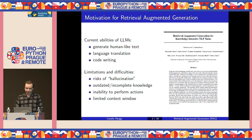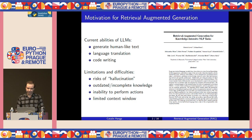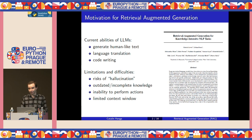We should also mention their inability to perform actions, in the sense that a language model by itself cannot directly access information stored in an external database. And of course, all LLMs have a maximum token limit or context window, which means that it wouldn't be possible to give an entire archive of documents as input to a language model because we would go above the token limit.